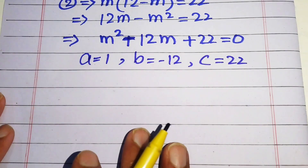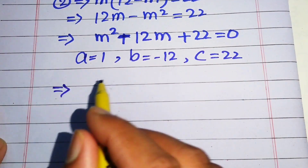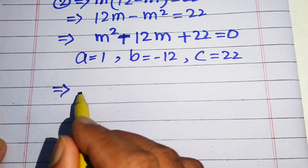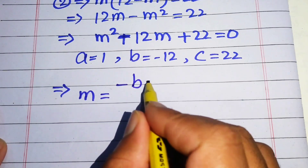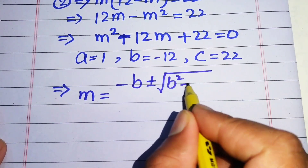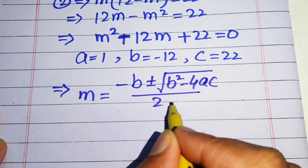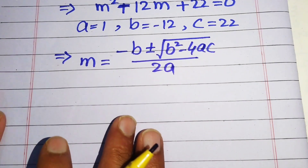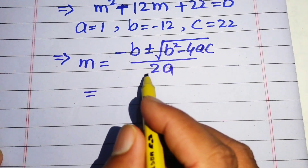We use the quadratic formula, which is: m equals negative b plus or minus the square root of (b² minus 4ac), all divided by 2a. Now we substitute the values of a, b, and c into this formula.